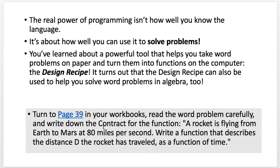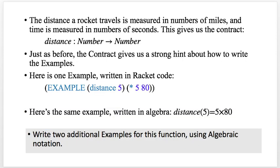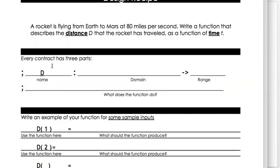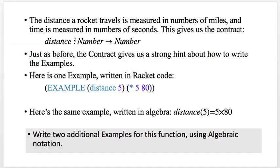Go ahead and write the contract for that — pause and do that. The distance the rocket traveled is measured in the number of miles and time is measured in seconds. The contract: if distance is the name of the function — in your book they called it d — that's the function name and it takes in a number and it gives out a number.